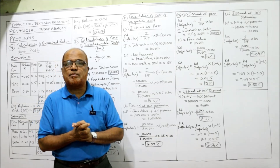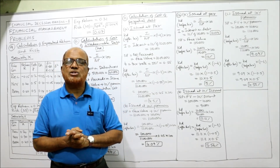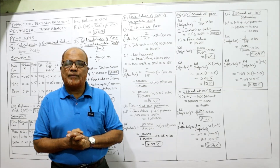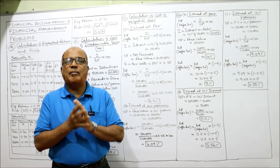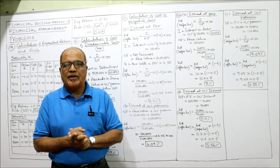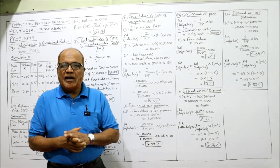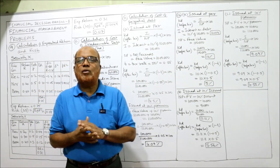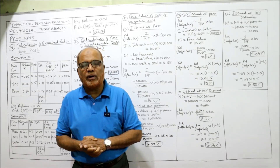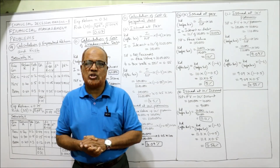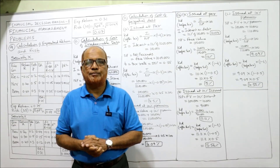All four problems are regarding cost of capital, particularly KD — cost of irredeemable debt. There are two types of KD: irredeemable and redeemable. In the next video, we will start problems on redeemable debt, where the formula will change. We will continue with the next problem in the next video. Thank you.